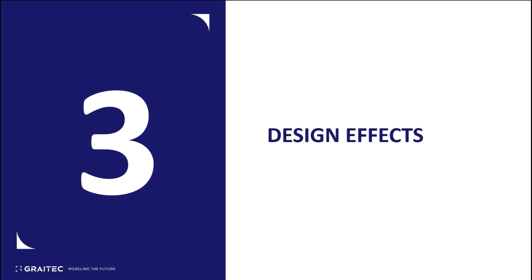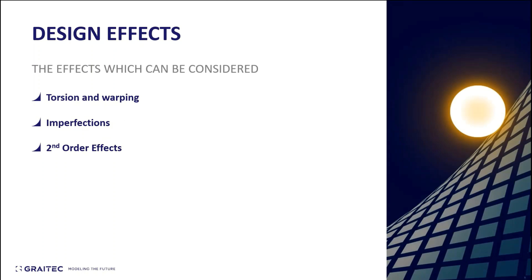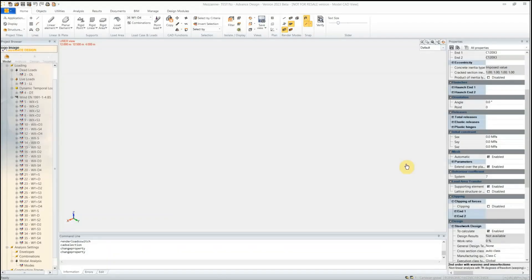Moving on to design effects — these are the effects taken into consideration in Advanced Design when designing cold form members. The effects include torsion and warping, imperfections, and second order effects. With second order effects, you have control over adding bedding, nodal springs, and various other parameters as required by the Eurocodes.